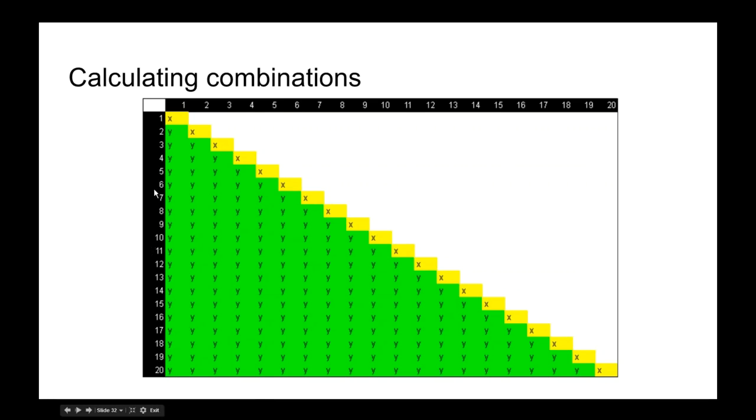and then we subtract that number because you can see that middle diagonal, it's also 20 because there are 20 combinations numbered with themselves. So you subtract that number, and then you remove half.